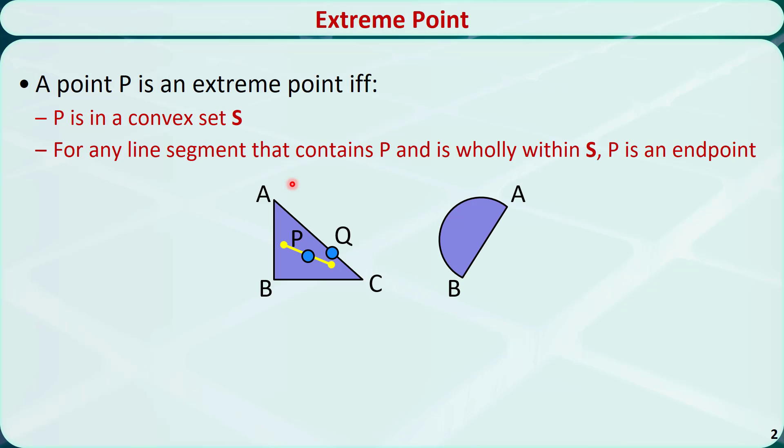In this figure, each point on the arc AB of the semicircle is an extreme point. Point A and point B are both extreme points. However, the points on the line segment between A and B are not extreme points, and the points inside S are not extreme points.